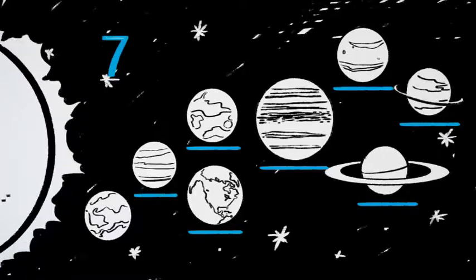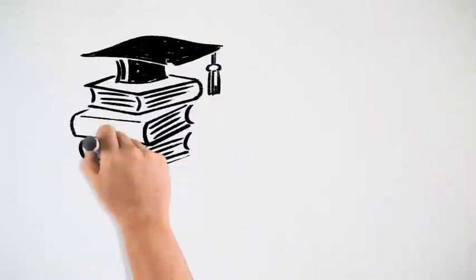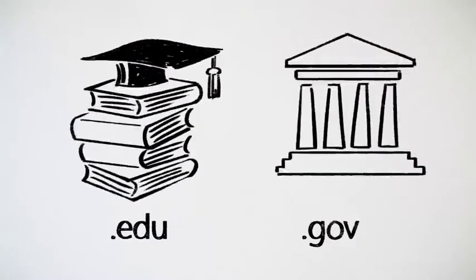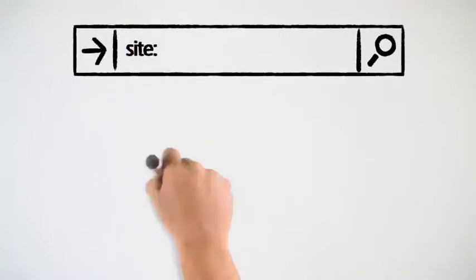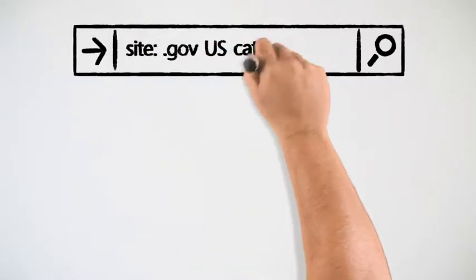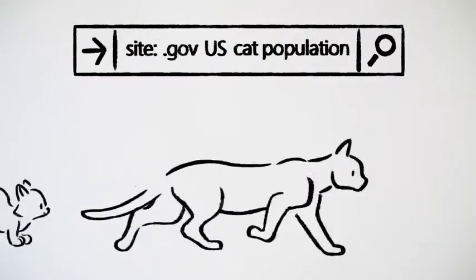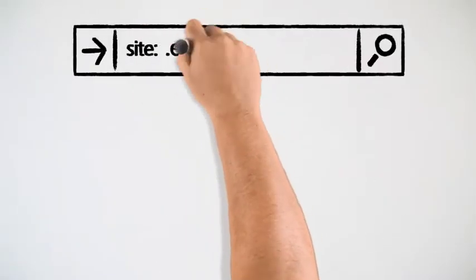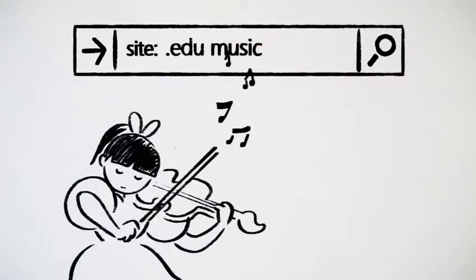Another way to get credible information is to control the type of sites you search. Knowing that education and government websites are often viewed as trustworthy and accurate, you can type site colon dot gov to request results from only government sources, or type site colon dot edu to search only educational resources.